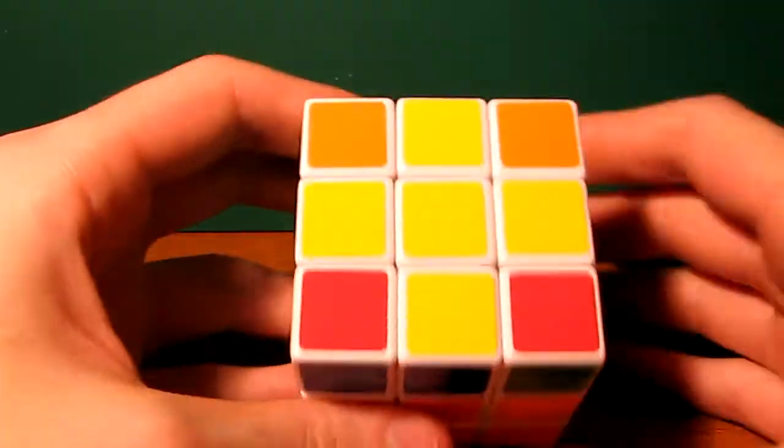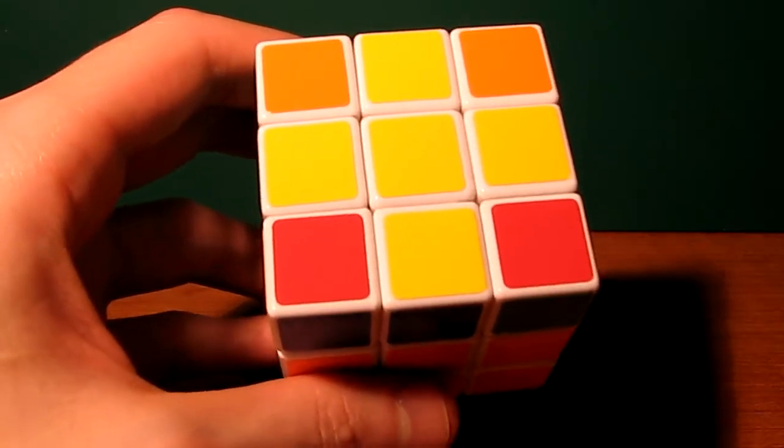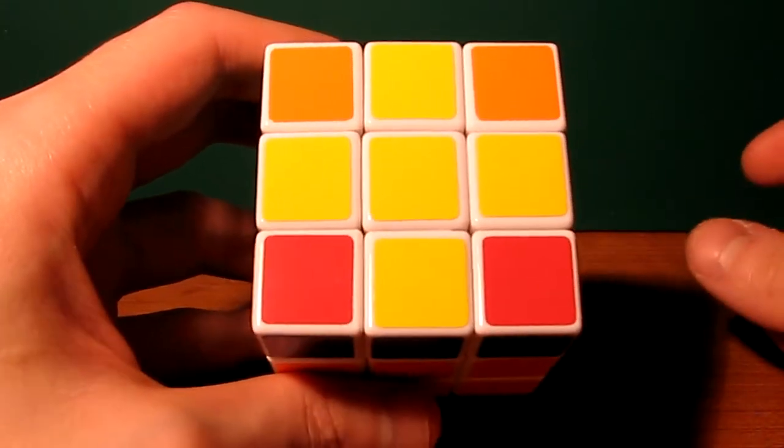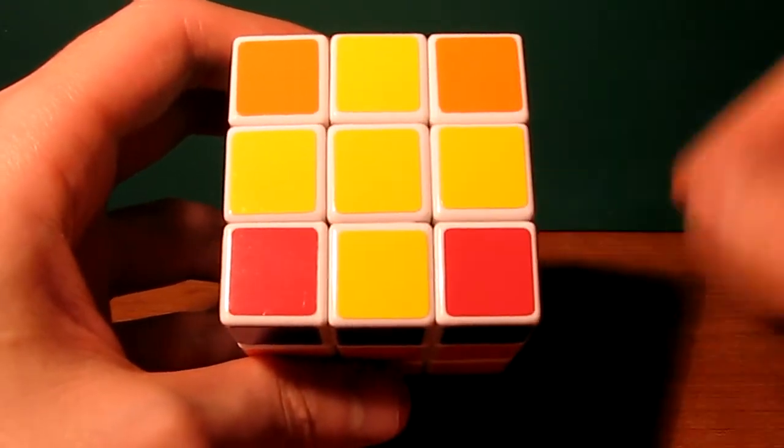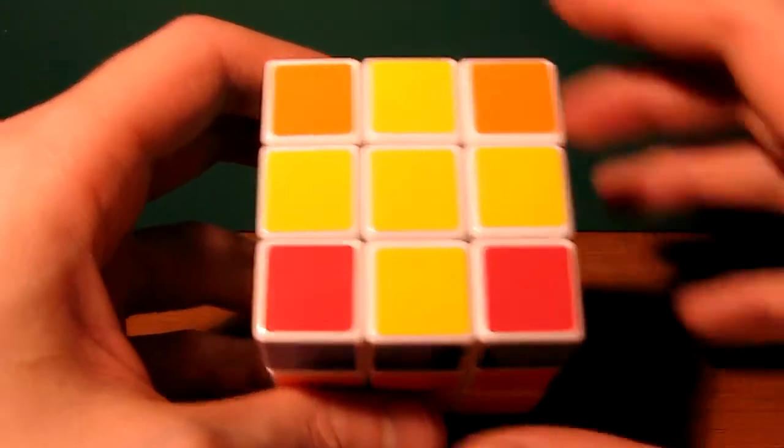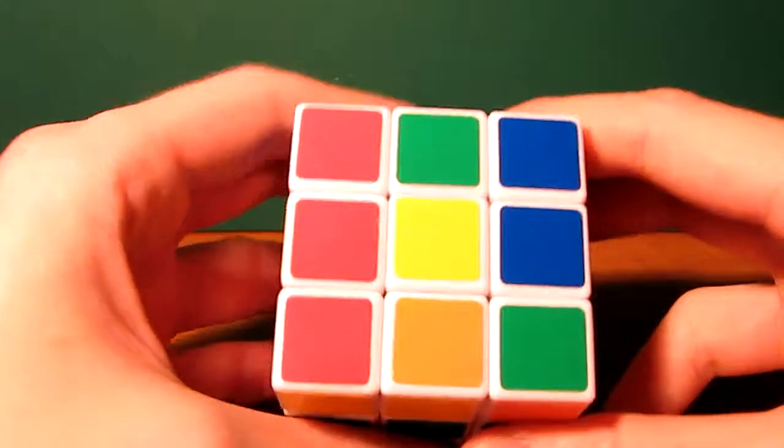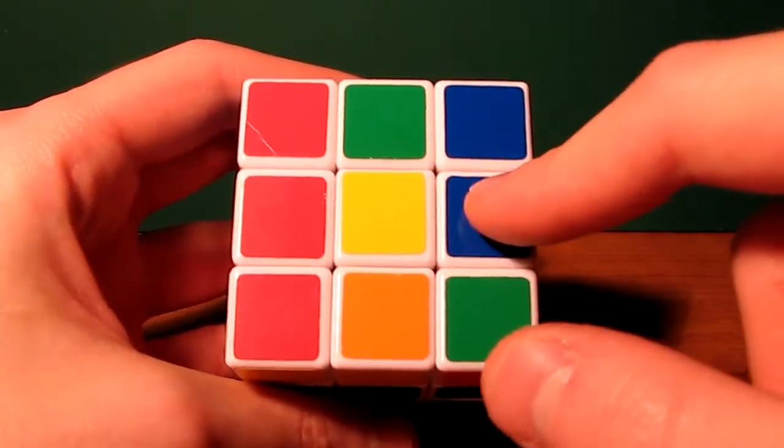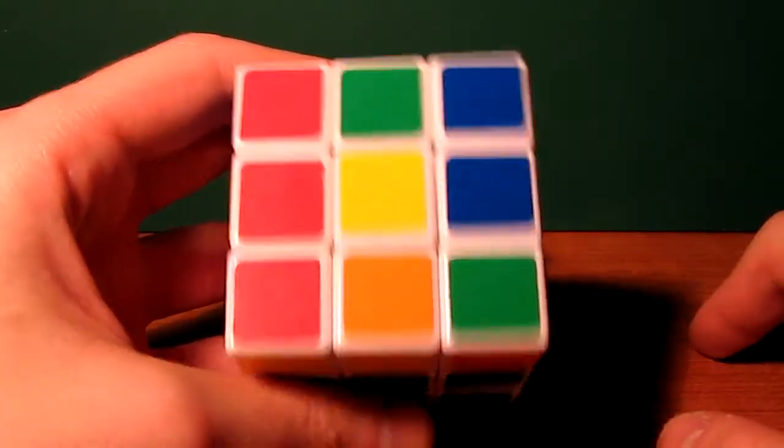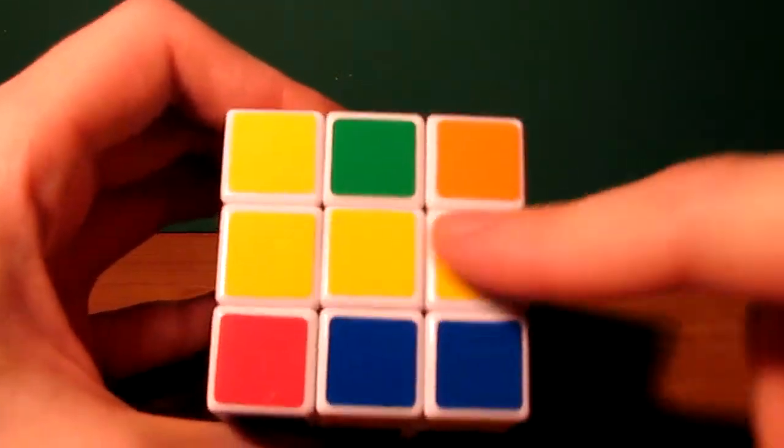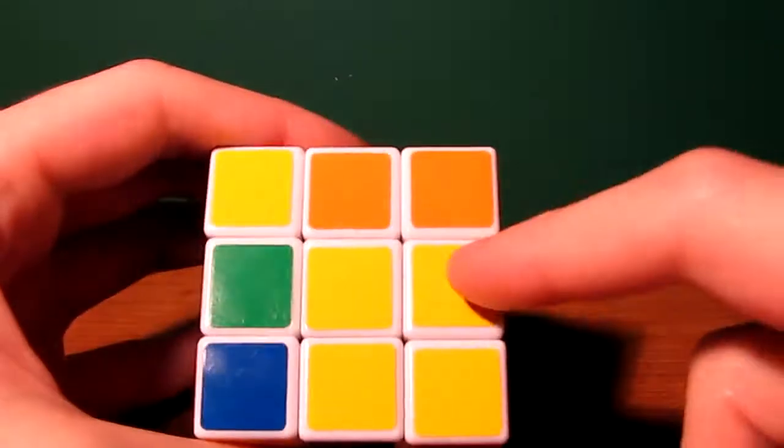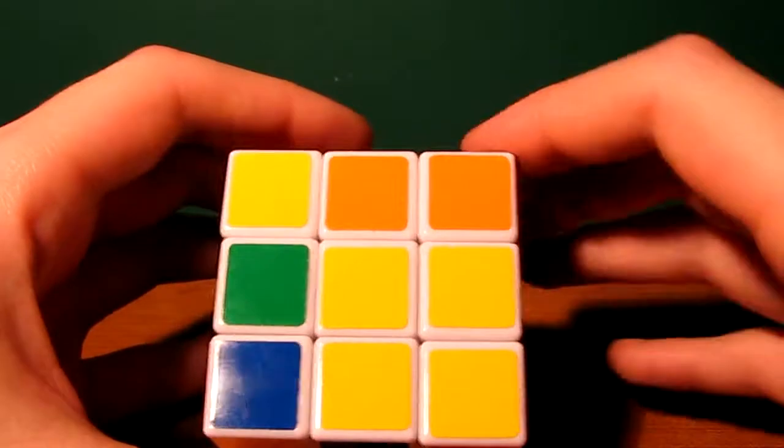And to do that, there are four different configurations which you might find yourself in for this step. The best one is obviously where the cross is already formed and we don't need to do anything. Another case is where we have no cross, no edges correctly oriented. Another case is where we have two edges correctly oriented in a line fashion. And the other one is where we have the edges oriented in an L shape, like that.